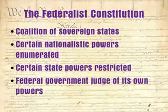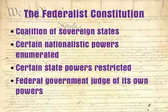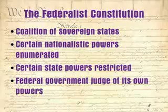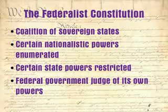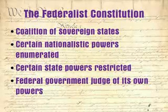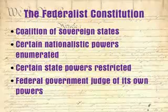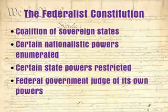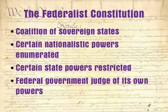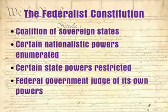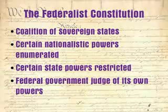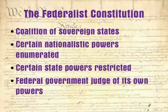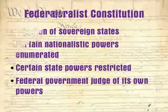Also, it is the federal government, not the states, that is the judge of its own powers. The systems of checks and balances set up by the three branches, as we discussed in Lecture 3, was put in place to prevent the federal government from usurping too much power. Of course, the states and the people do have one recourse when they disagree with what the federal government determines its own powers to be: the process of amendment.